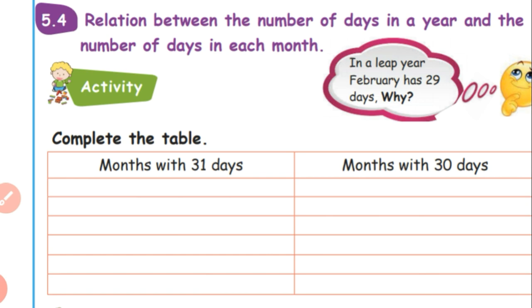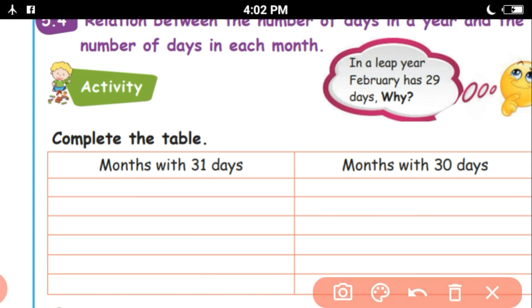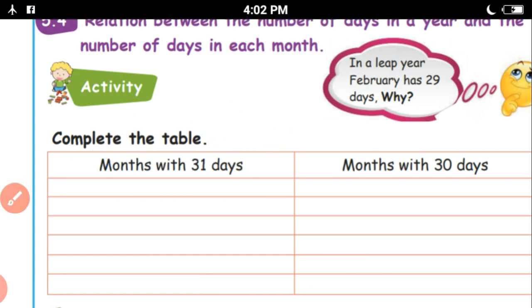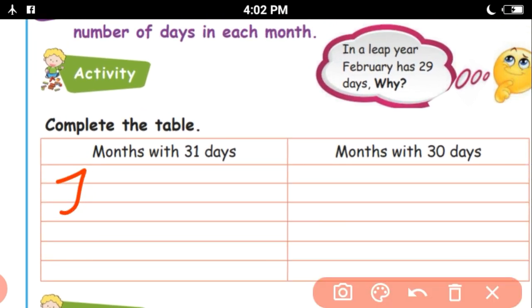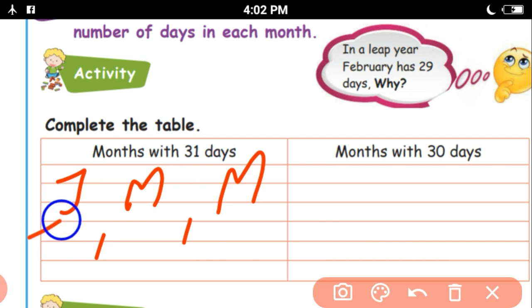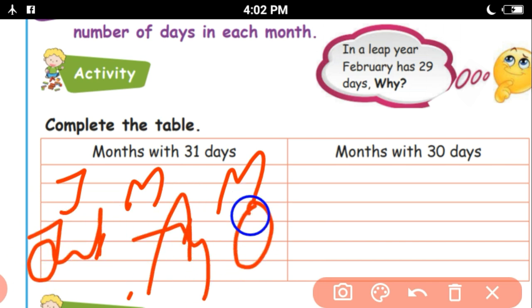See this activity — complete the table. Months with 31 days: you can write the month names in the table. What are they? January, March, May, July, August, October, and December.